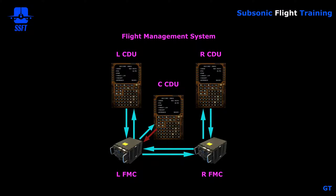We also have two flight management computers or FMCs, and the CDU is our interface to the computer — it's how we talk to the computer. Normally it's a two-way communication street: if we type information into the CDU it goes to the FMC, and information from the FMC can also come to the CDU. On earlier generation airplanes, the center CDU would normally receive information from the left FMC but could not send information to it. On later model airplanes, it is truly a spare and could be used if a CDU were to fail.